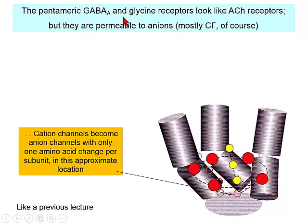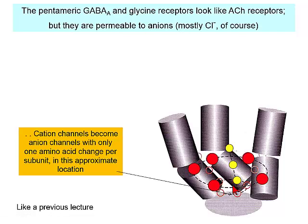The GABA and glycine receptors are not cation channels like acetylcholine receptors — they're permeable to anions, mostly chloride, the dominant negatively charged anion in the body. They are in fact so close to the structure of acetylcholine receptors that you can change a cation channel into an anion channel with only one amino acid change per subunit.